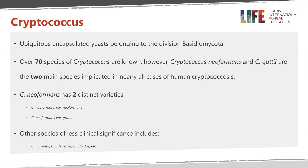This is a common yeast, it's an encapsulated yeast, it's covered by a polysaccharide capsule and belongs to the fungal division, the Basidiomycota. At least 70 species of the organism have been described and there are probably many more. However, in terms of clinical disease, Cryptococcus neoformans and Cryptococcus gattii are the two main species that are implicated in nearly all cases of human cryptococcosis, and the disease which occurs in various animals as well.